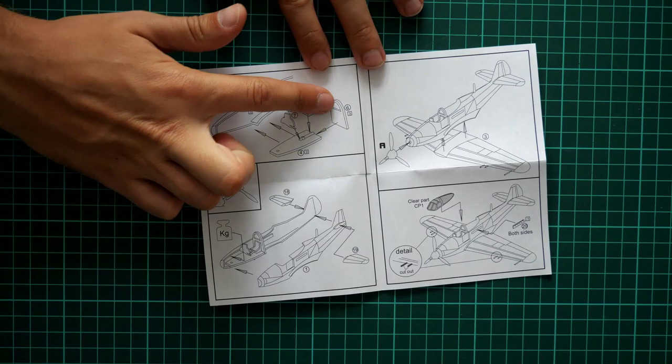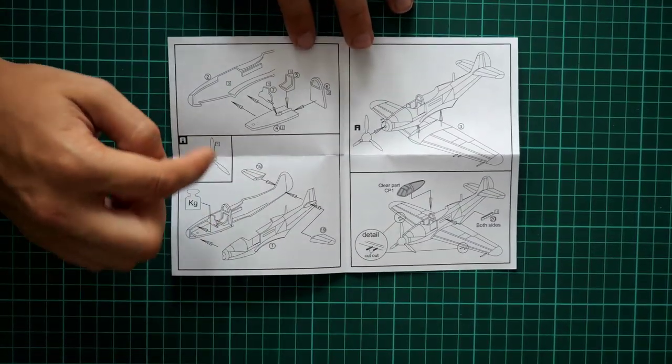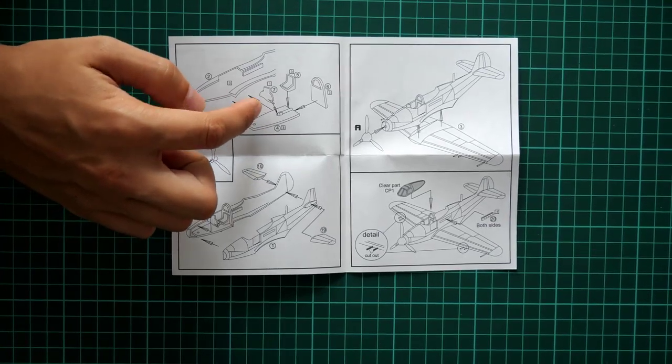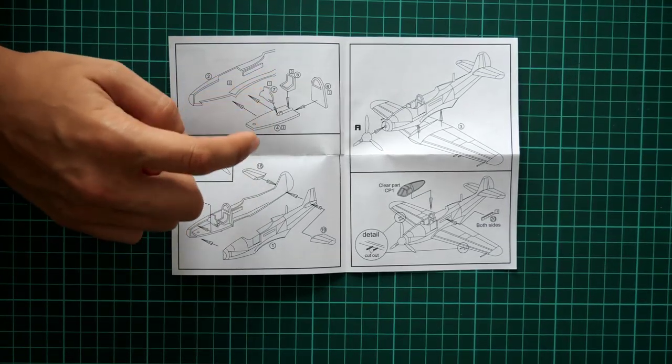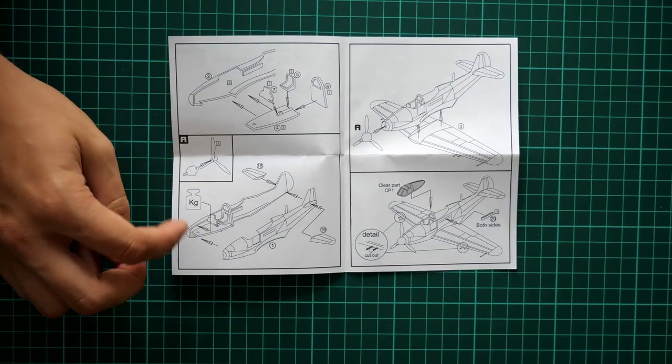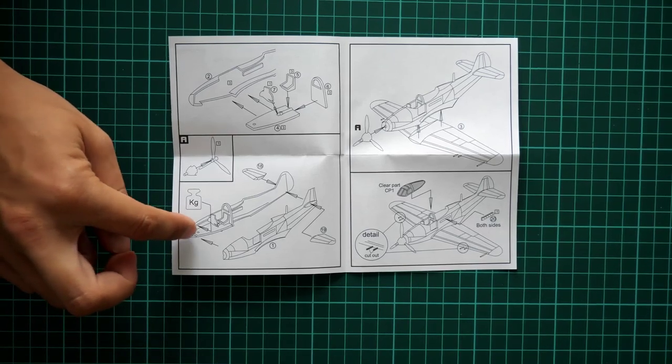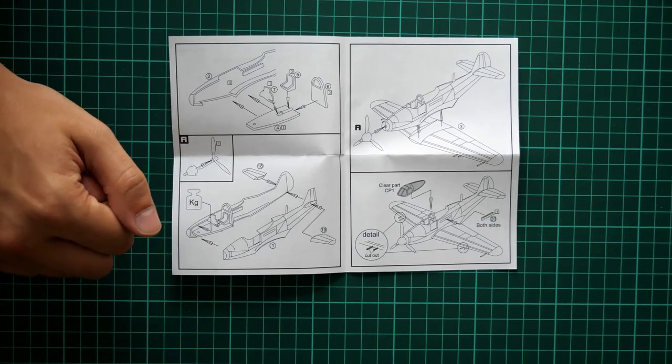But next page brings to us the assembly process. So as you can see, this part is actually the rear wall of this aircraft. And also here we start with cockpit floor. We install the pilot seat. We install the instrument panel. Then we continue by joining the fuselage halves together. We install the propeller hub on the propeller.